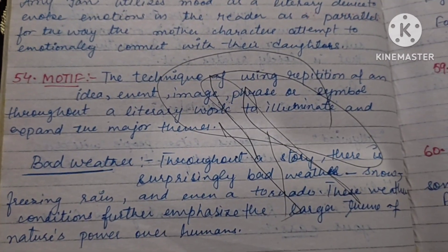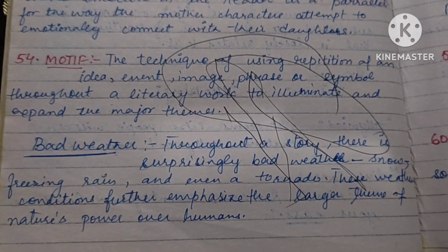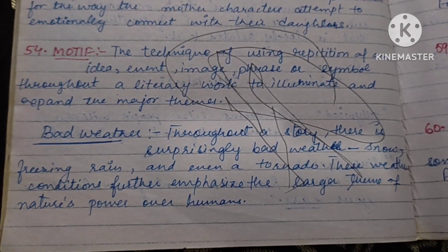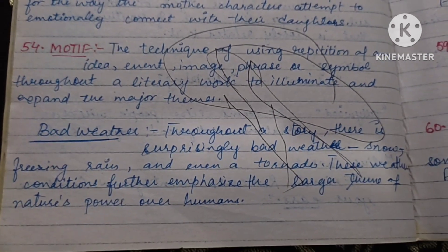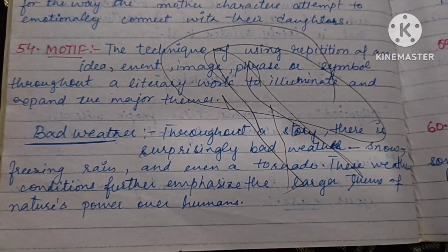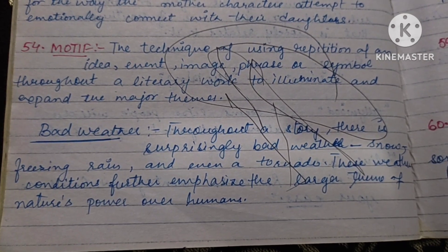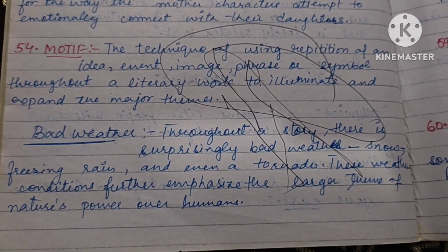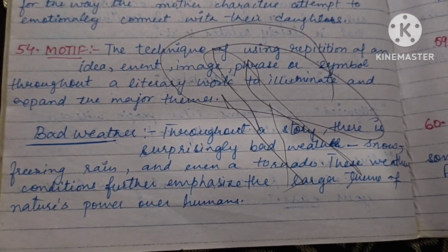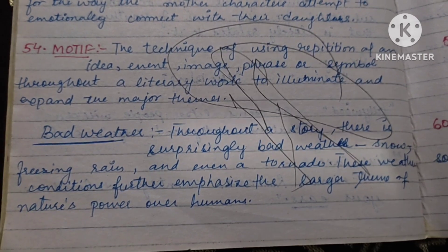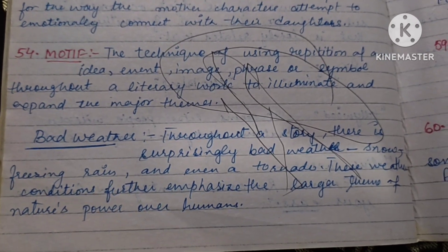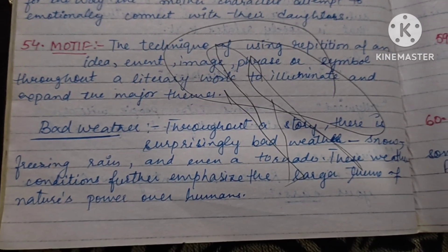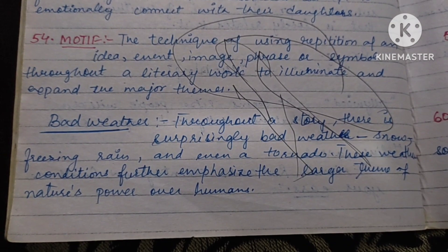Motive is the technique of using repetition of an idea in any literary work. If you repeat an idea, an event, an image, a phrase, or a symbol, when it repeats every time, it will expand its major theme. We call it Motive.